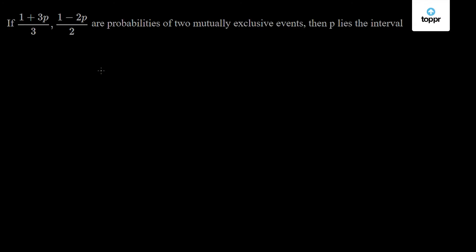Hi everyone. Our topic for today is probability, and our question is: given the probabilities of two mutually exclusive events as (1 + 3p)/3 and (1 - 2p)/2, we need to find the interval where p lies.